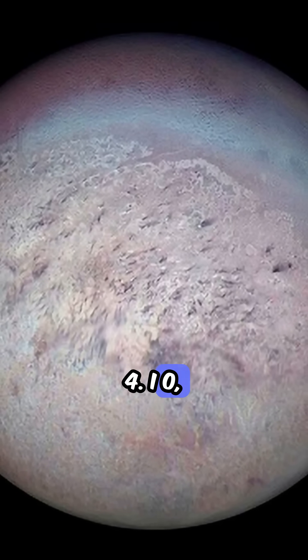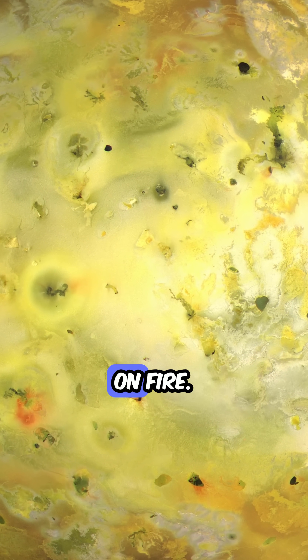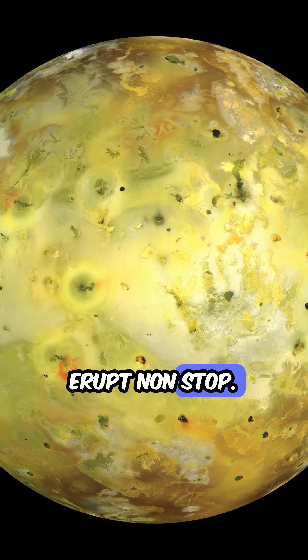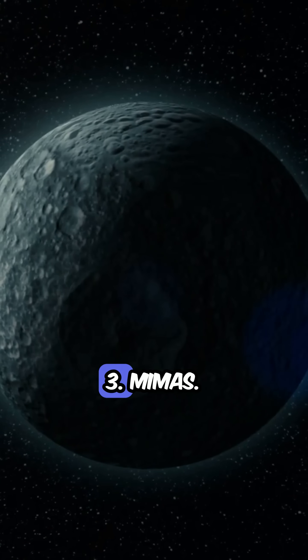Number 4: Io. Jupiter's moon is literally on fire. Over 400 volcanoes erupt non-stop. It's the most violent place in the solar system.